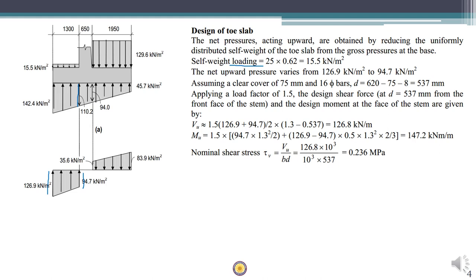It has to be noted that the weight of the soil on the toe slab is neglected. This is the load acting on the toe slab — it is a uniformly varying load. We assume a clear cover of 75 mm because it is below soil; in structures such as footings we use a minimum cover of 75 mm. Assuming 16 mm diameter bars, the effective depth is total depth minus clear cover minus half the bar diameter (16/2), giving an effective depth of 537 mm.